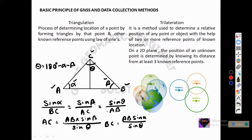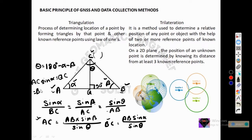Now we can calculate sides AC and BC, and since we already know the positions of A and B, we can easily find the position of C. We can also verify the position of C by dropping a perpendicular from point C — that is, at 90 degrees. If we name the foot of the perpendicular as Q, then AC·sin(alpha) equals QC equals BC·sin(beta). If this holds true, then our position calculation is correct.